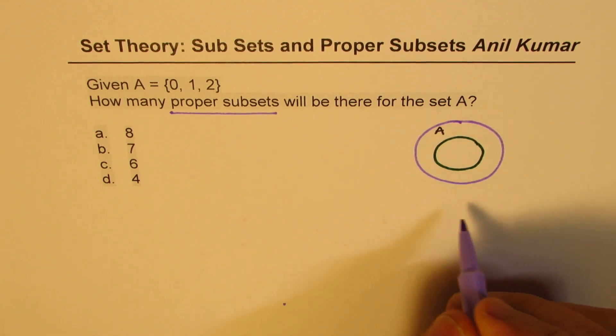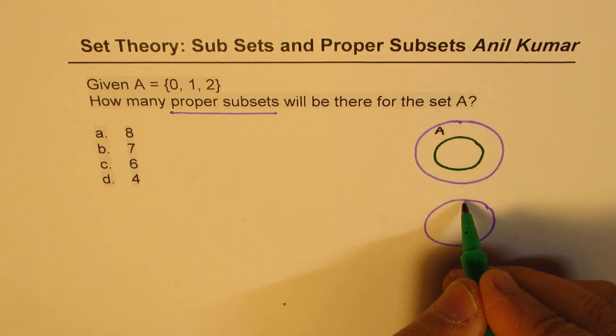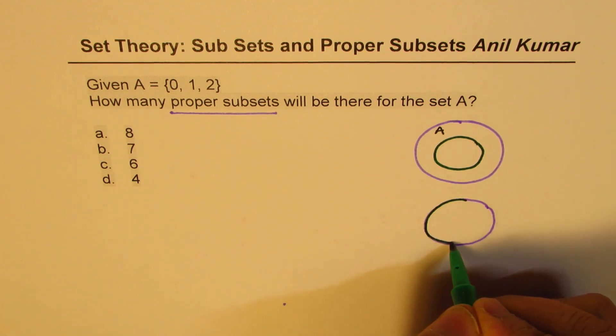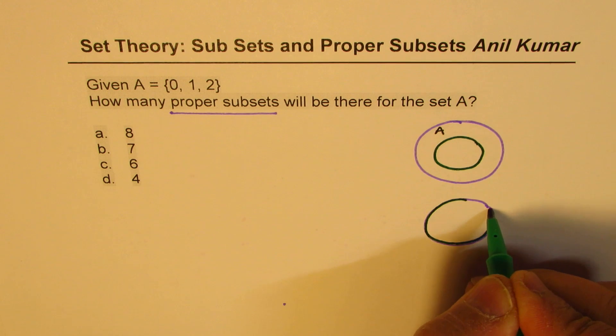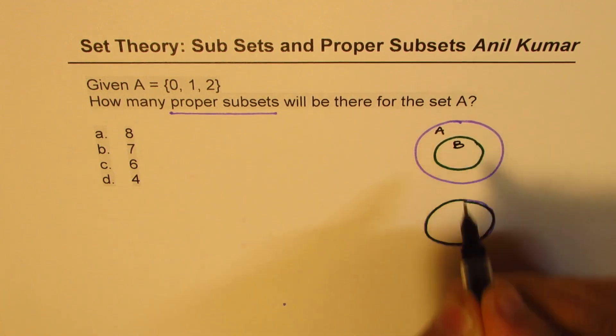Now we could also have a condition where for A we have another set B which is same as A. So we could have two scenarios. One as shown here and one where A and B are equal.